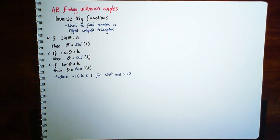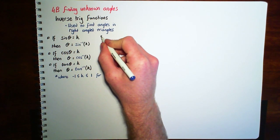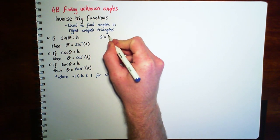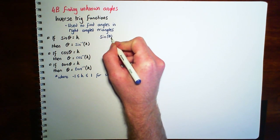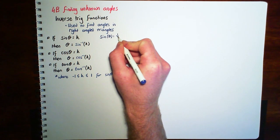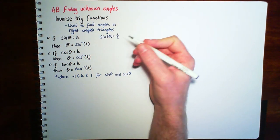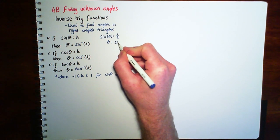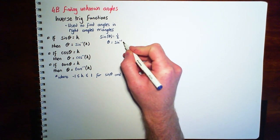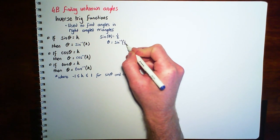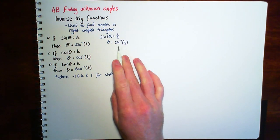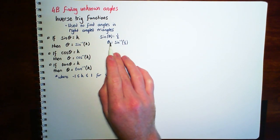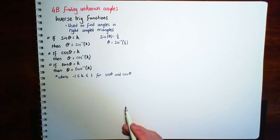For example, if we had sine of theta equals a half, then we can find theta by saying theta is equal to the inverse sine of a half. And we just type this in our calculator and it'll give us an angle for theta.